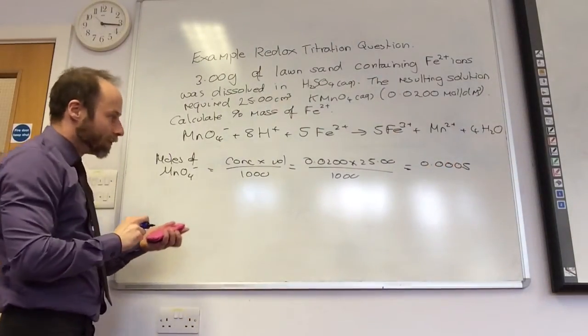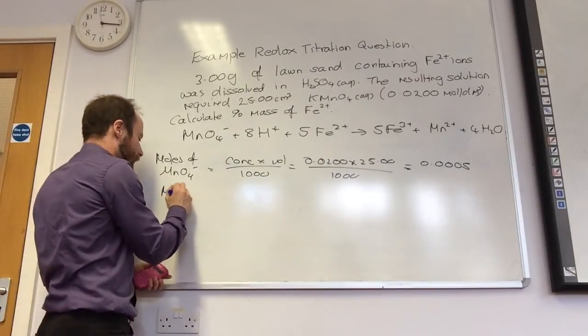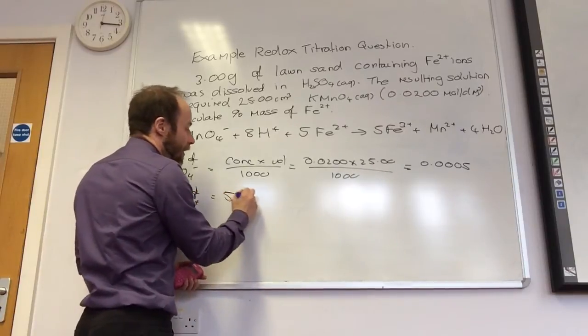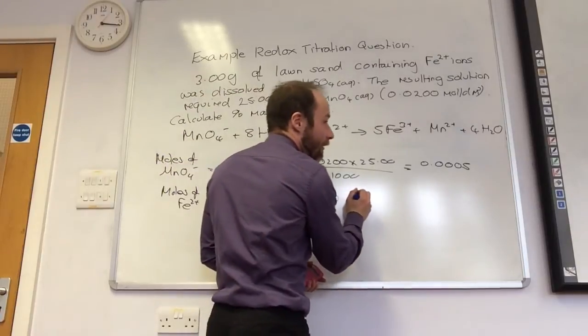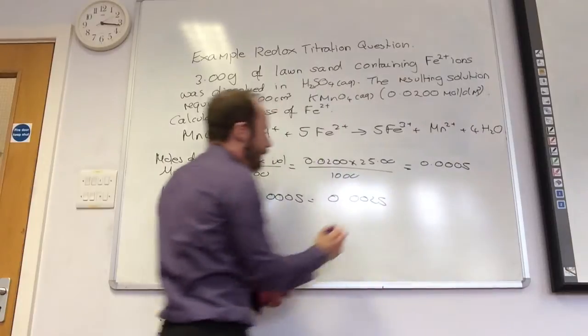So, I've got that. Then what do I need to do? Moles of Fe, so times by 5. Brilliant. Moles of Fe²⁺ is 5 times that, which is 0.0025. Fantastic.